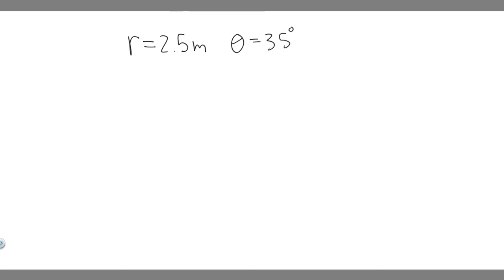So we're given this polar coordinate, r equals 2.5 meters, theta equals 35 degrees. We know a polar coordinate is written like this: r, theta, and normal coordinates are just x, y. So how do we convert between the two?